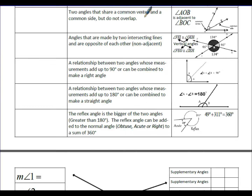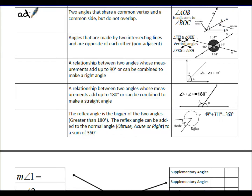Adjacent angles are two angles that share a common vertex and a common side but don't overlap. Angle AOB is adjacent to angle BOC because they share side BO and vertex O — that's what makes these two angles adjacent angles.